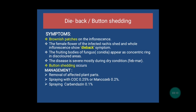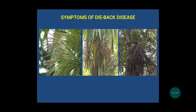The next disease is dieback. It is also known as button shedding, and the causal organism is Colletotrichum gloeosporioides. The symptoms of the disease are brownish patches on the inflorescence; the female flowers of the infected rachis shed, and the whole inflorescence shows infection. The fruiting bodies of the fungus called conidia appear as concentrated in the discolored areas. The disease is mostly seen in February–March months, that is in dry conditions. The preventive measures are removal of affected plant parts, spraying copper oxychloride 0.25%, mancozeb 0.2%, and spraying 0.1% carbendazim. The picture shows brownish tips and patches on plant parts and budding of the tree.